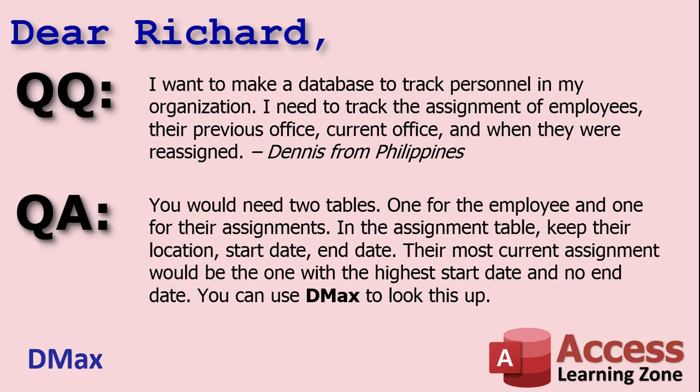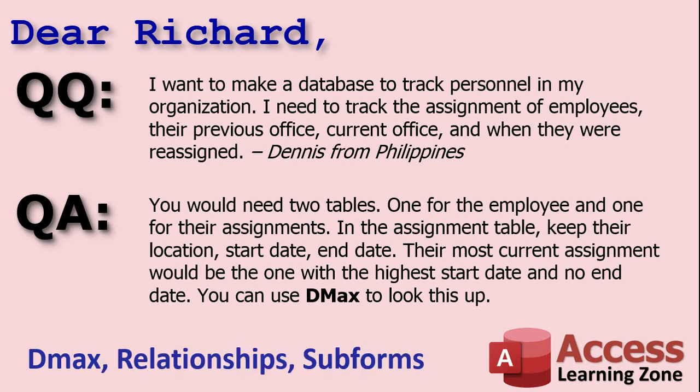Dennis from the Philippines says he wants to make a database to track personnel in his organization — tracking employee assignments, their previous office, current office, and when they were reassigned. You would need two tables: one for the employee information (first name, last name, phone number, etc.) and another one for their assignments. In the assignment table, keep their location, what office they're in, and the start date and end date of that assignment so you can have multiple records. It's a one-to-many relationship. Watch my relationships video if you're not sure how to do this. You could store that information in a sub form. Their most current assignment would be the one with the highest start date and no end date, so you can use DMax to look that up — I have a video on DMax as well.